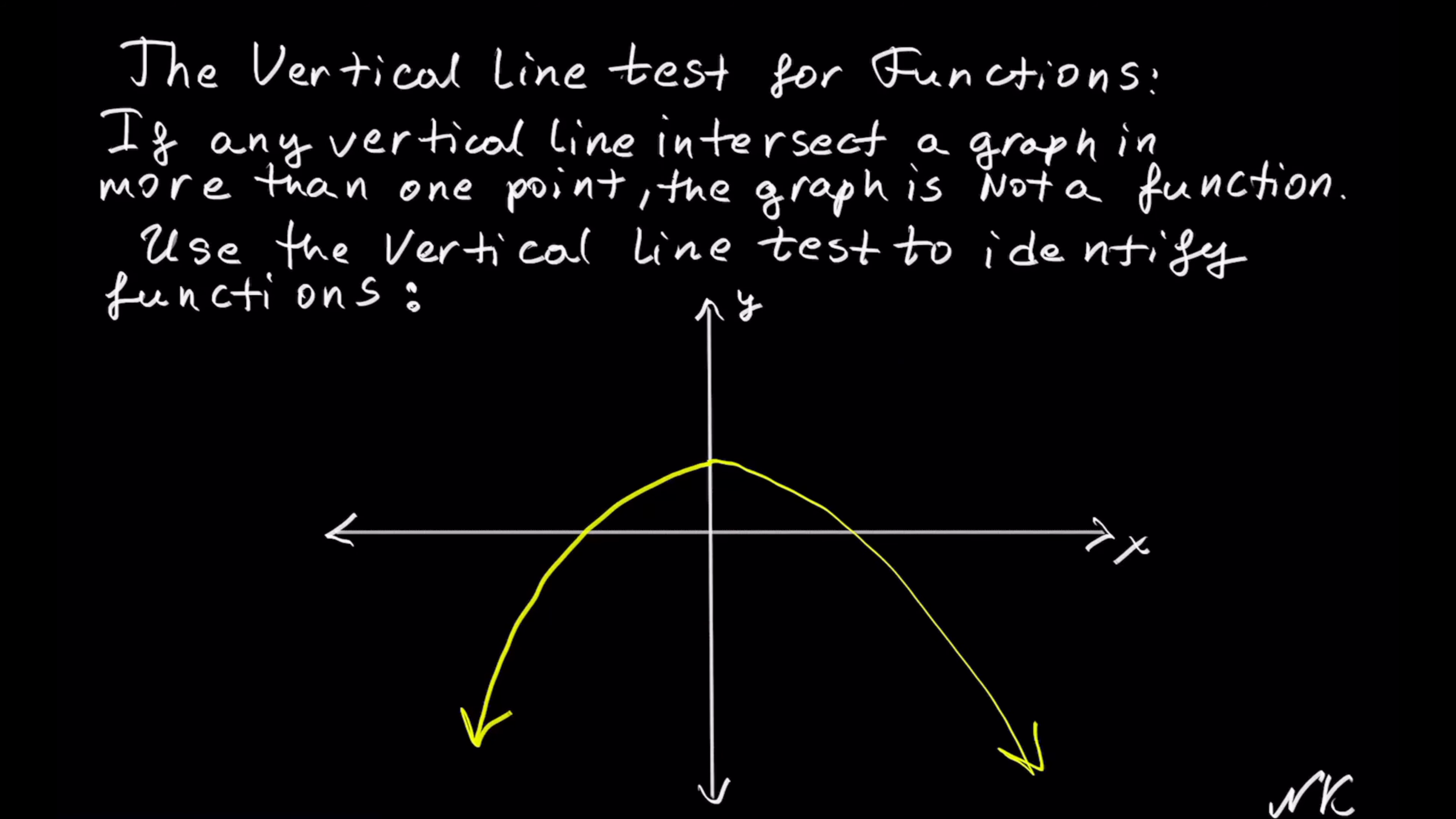In this example we have an upside down parabola. If I test with the vertical lines, they all cross this graph in only one place. So an upside down parabola is a function.